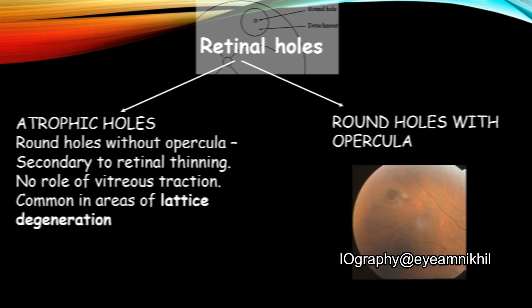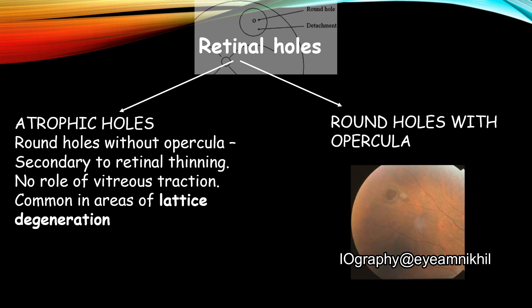Let's talk about retinal holes now. Retinal holes may be atrophic holes, which are more common in areas of lattice degeneration, or they may be round holes with opercula, which are caused by vitreous traction.